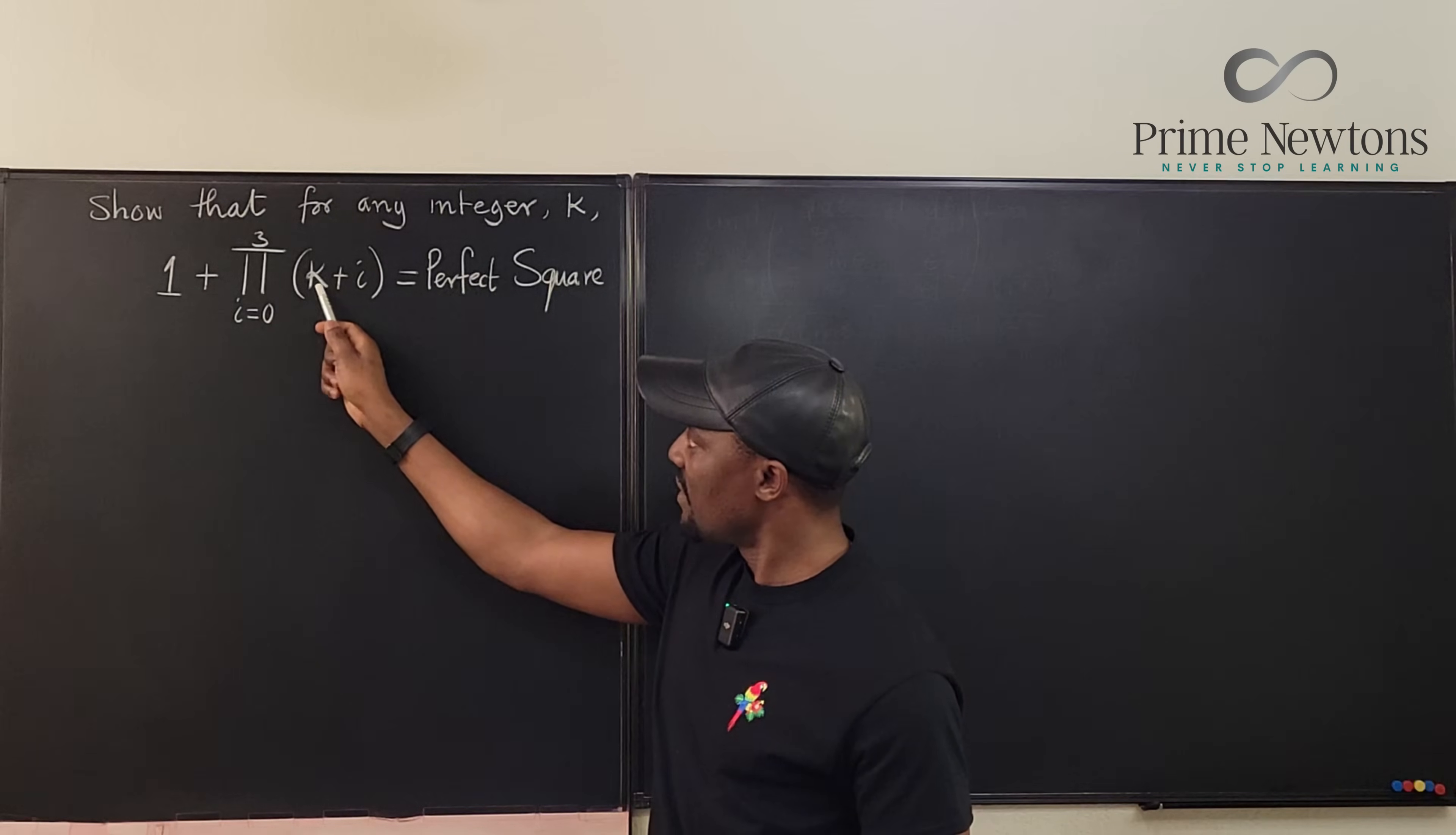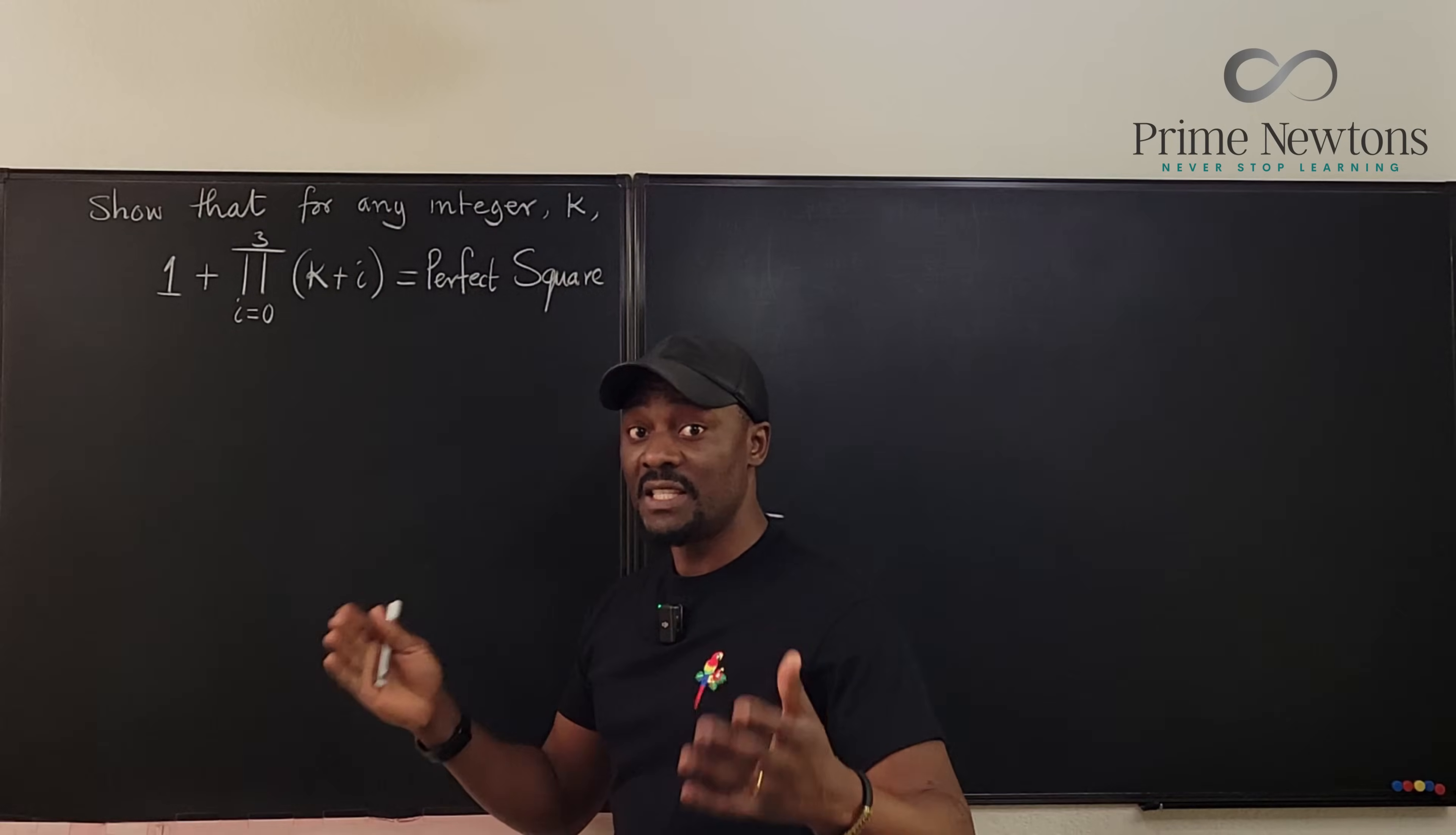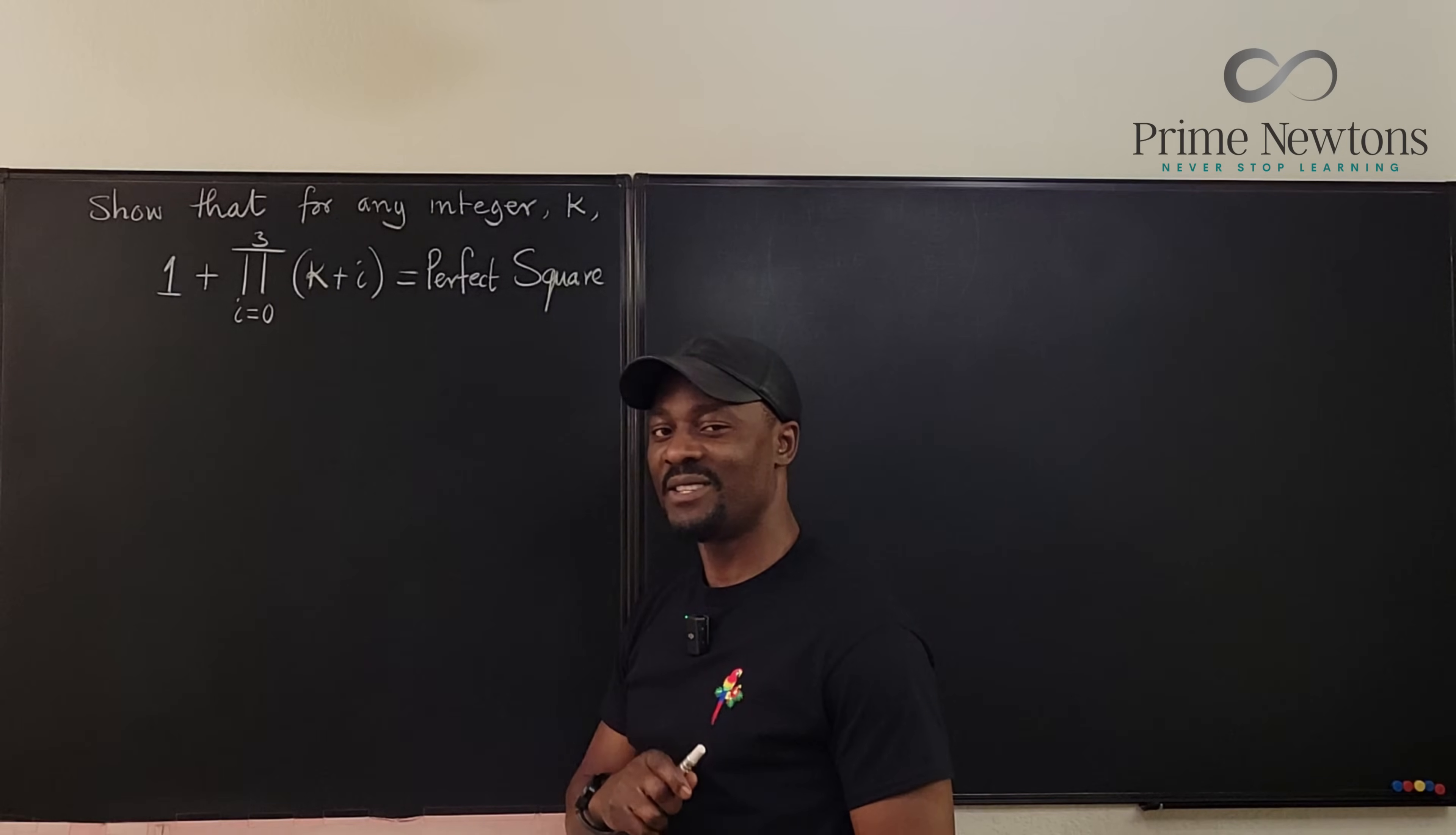It says that k plus i, where i begins from zero and goes all the way to three. So if we go from zero, one, two, three, it means we're going to be multiplying four things. The easiest way for you to understand this kind of problem or to see where to go is to write this out. Let's get into the video.